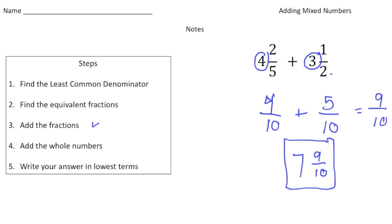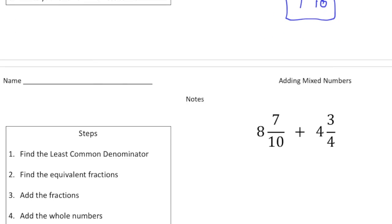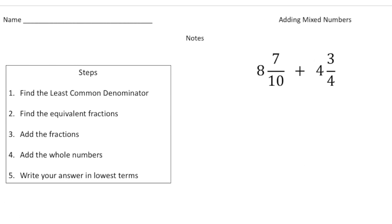Alright let's turn the page. Let's do one more together, it's a little more complex. Here we have eight and seven tenths plus four and three quarters. Once again we need to rename these fractions with common denominators. The least common multiple of ten and four is twenty, so we're going to rename these fractions with twenty as denominators. Twenty and twenty.